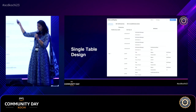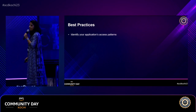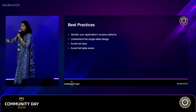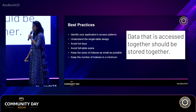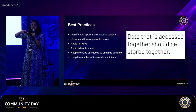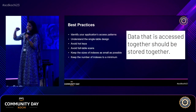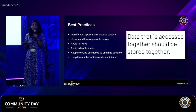We've now brought everything into a single table. Best practices: identify your application access patterns, understand your business use case, use single table design, avoid hot keys — like using category as a partition key, avoid full table scans as they will burn your budget, keep index sizes as small as possible, and minimize the number of indexes since every write pays WCU per index. The key takeaway for any NoSQL, not just DynamoDB: data that is accessed together should be stored together. If it's not, you'll be doing joins or aggregates. Users and orders are accessed together, so store them together.